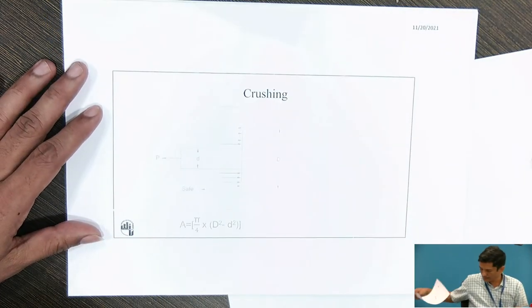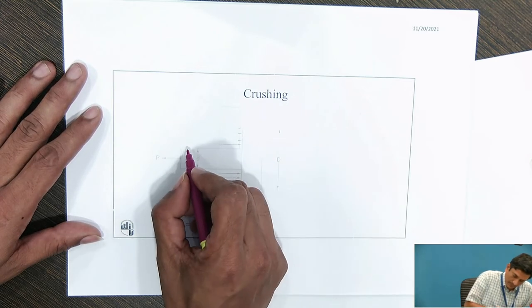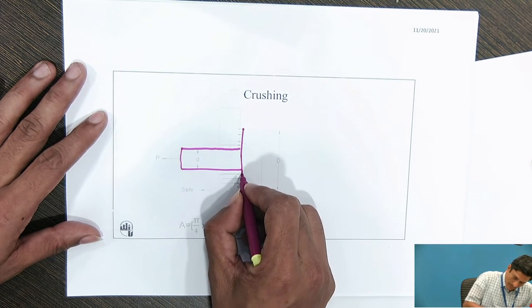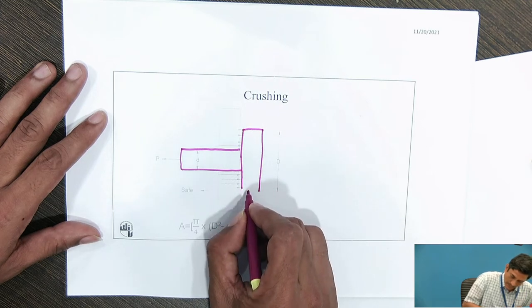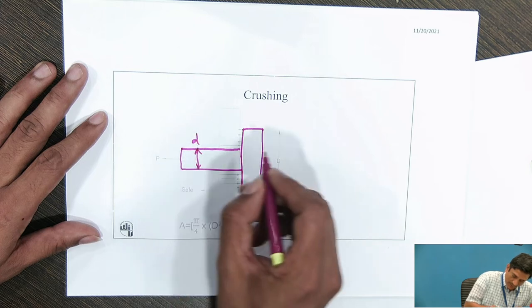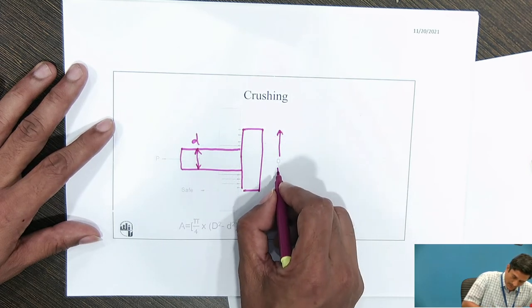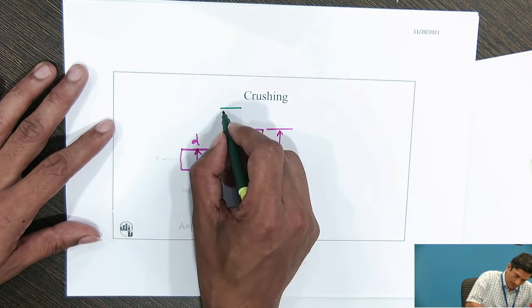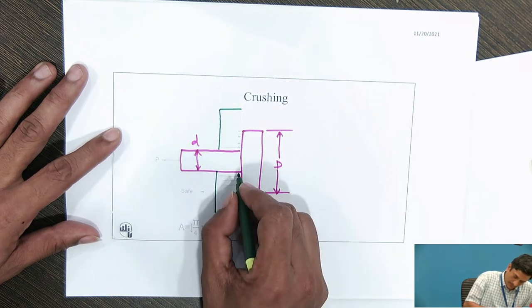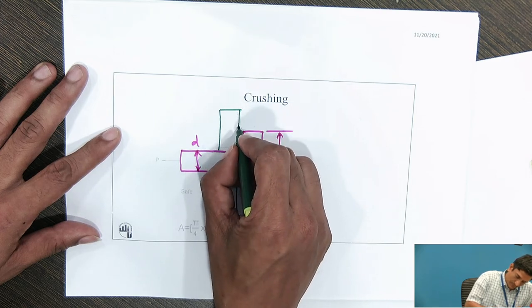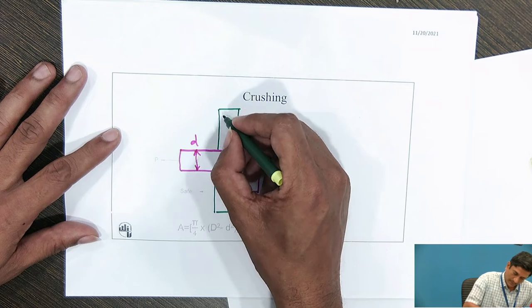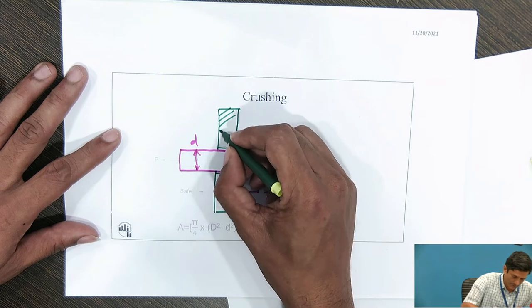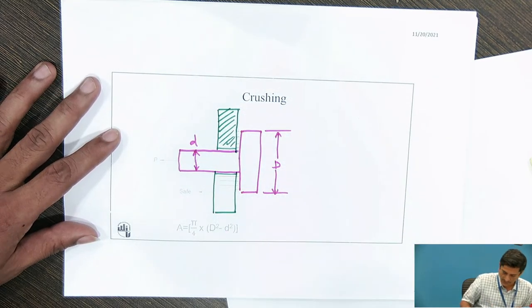When it touches the bracket, the diameter of this pin we have taken as small d. Here the pin head diameter we have taken as capital D. The bracket we have considered over here.